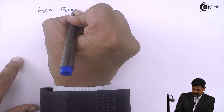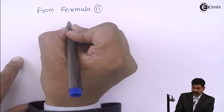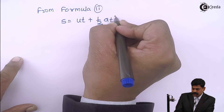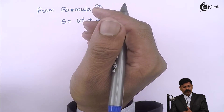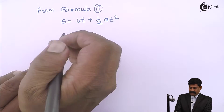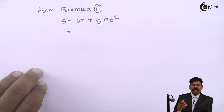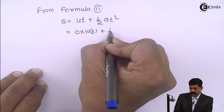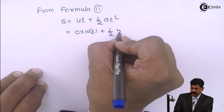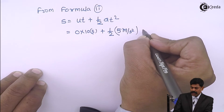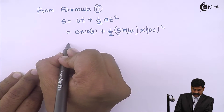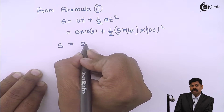From formula 2: s equals ut plus half at squared. Putting all values to calculate the distance traveled by the particle: initial velocity is zero into 10 seconds, plus half times acceleration 5 meter per second square, into time 10 seconds squared. Calculating this, I get s equals 250 meter.